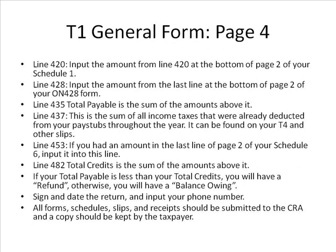Page 4 of the T1 General Form: Line 420 — input the amount from line 420 at the bottom of page 2 of your Schedule 1. Line 428 — input the amount from the last line at the bottom of page 2 of your Ontario 428 form. Line 435 — total payable is the sum of the amounts above it. Line 437 is the sum of all income taxes already deducted from your pay stubs throughout the year, found on your T4 and other slips. Line 453 — if you had an amount on the last line of page 2 of your Schedule 6, input it here. Line 482 — total credits is the sum of the amounts above it. If your total payable is less than your total credits, you will have a refund; otherwise you will have a balance owing. Sign and date the return and input your phone number. All forms, schedules, slips, and receipts should be submitted to the CRA and a copy should be kept by the taxpayer.